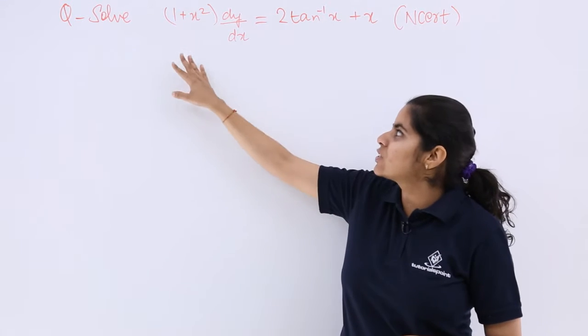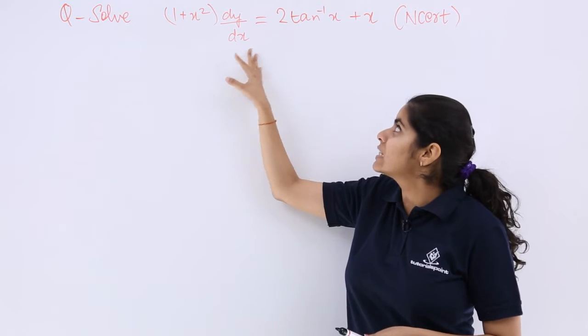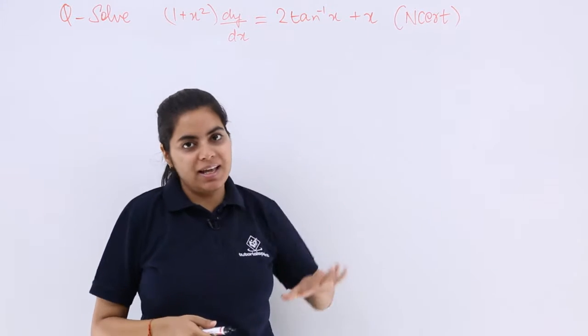Let's see this NCERT question. It says solve (1+x²)dy/dx = 2tan⁻¹x + x.